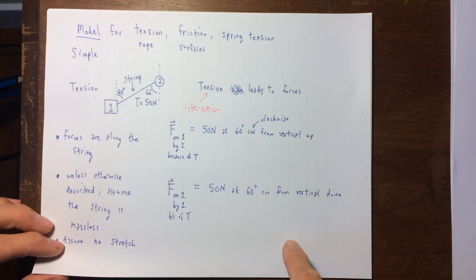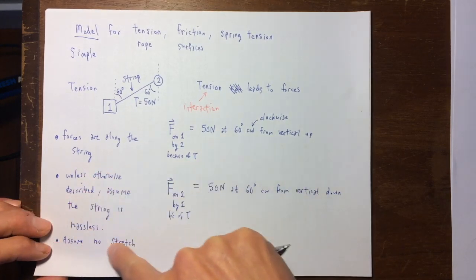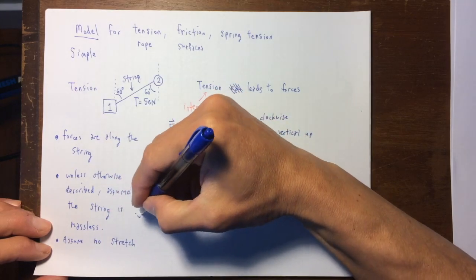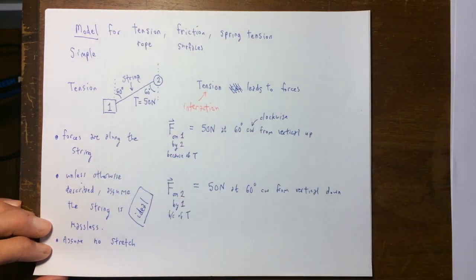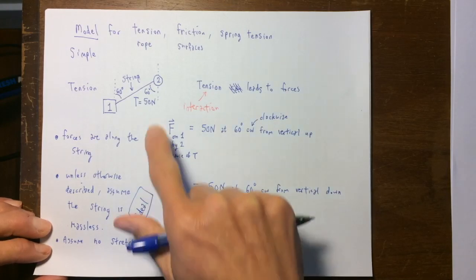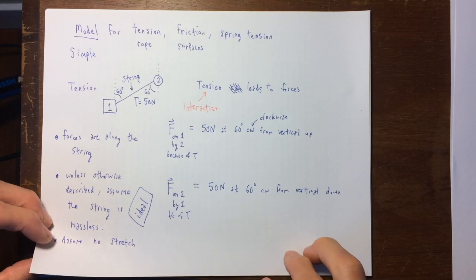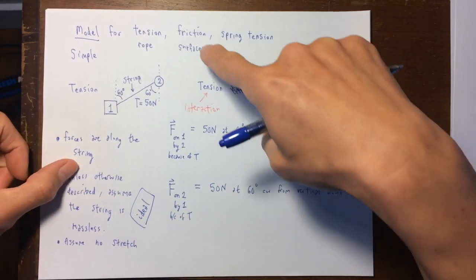But we are considering only simple models. So, that's as far as I'm going to introduce a model for a simple, ideal string. Sometimes, this word is in physics problems. It says, consider an ideal string that connects two objects. This is what's meant by ideal. All right.